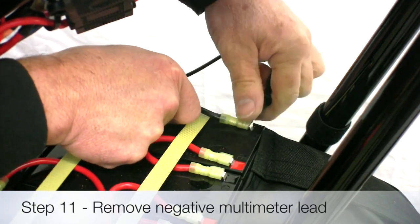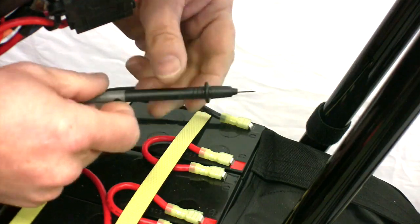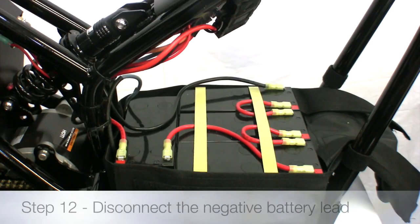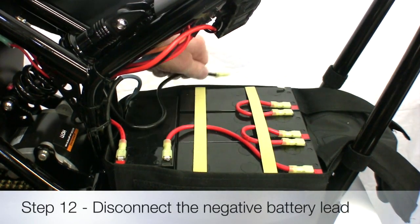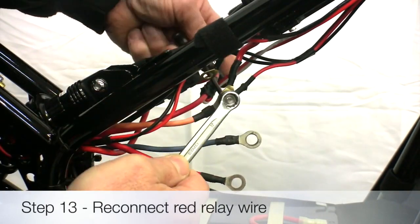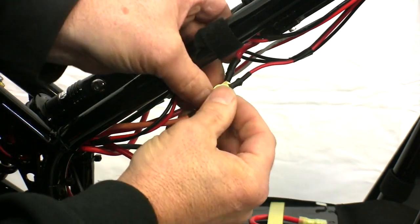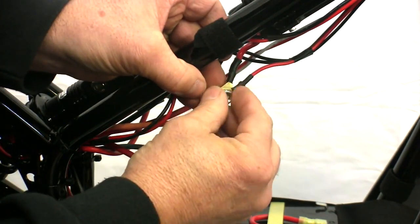Disconnect the multimeter. Disconnect the black negative battery wire from the negative battery terminal. Reconnect the thicker red relay link wire to the other red wires with the nut and bolt fastening.